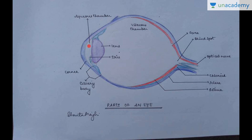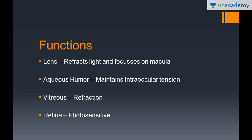So the light comes in and it is focused at the macula lutea — that is the main function of the refractory apparatus of the eye. What aids in refraction is the lens, the vitreous chamber which is filled with the jelly-like substance known as the vitreous humor, and the aqueous humor which is present in the aqueous chamber. Even the cornea to some extent refracts the light. So its function is to refract light and focus it on the macula.